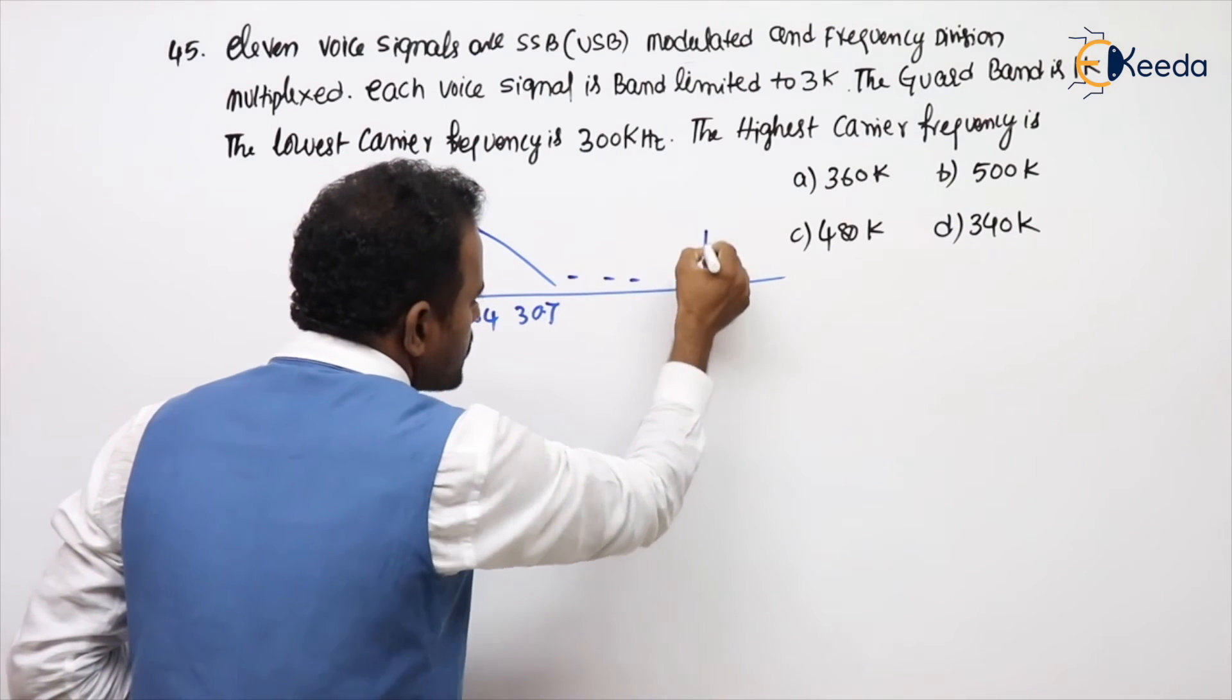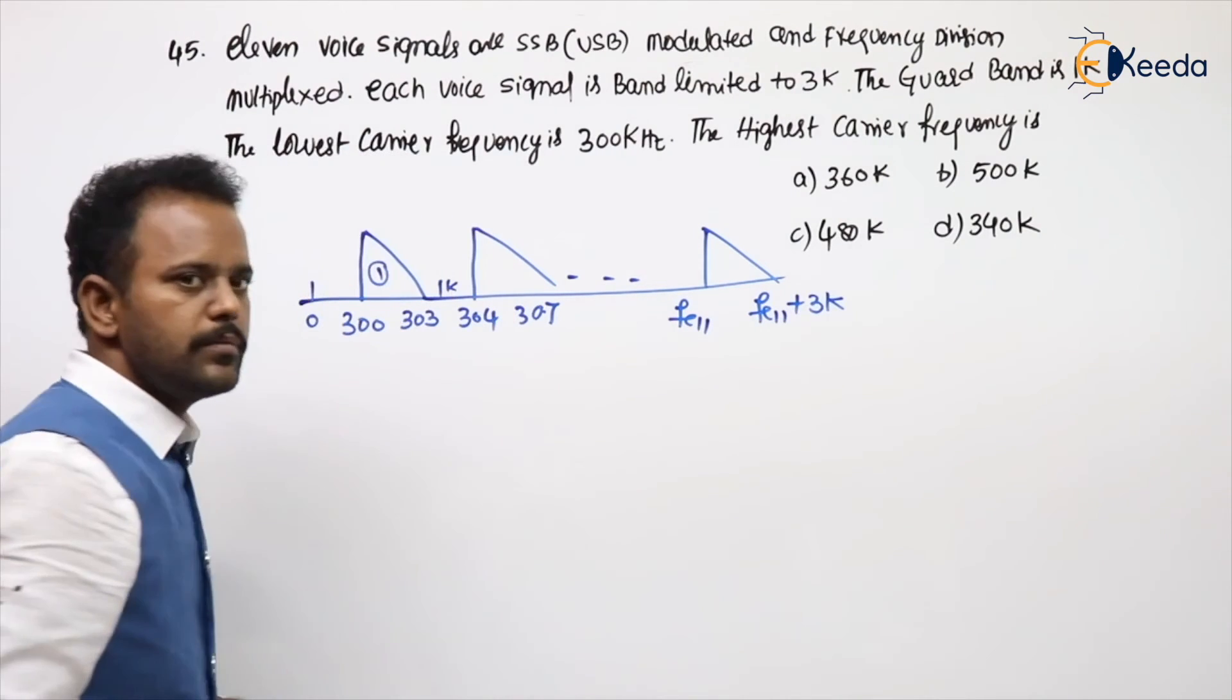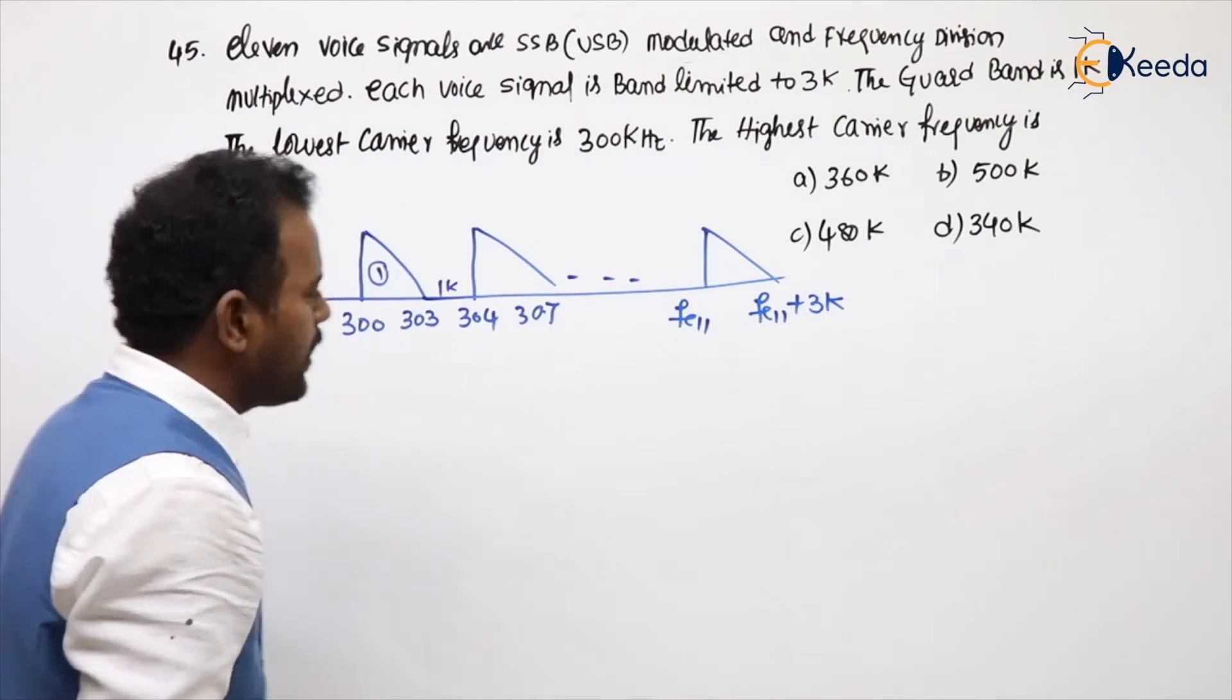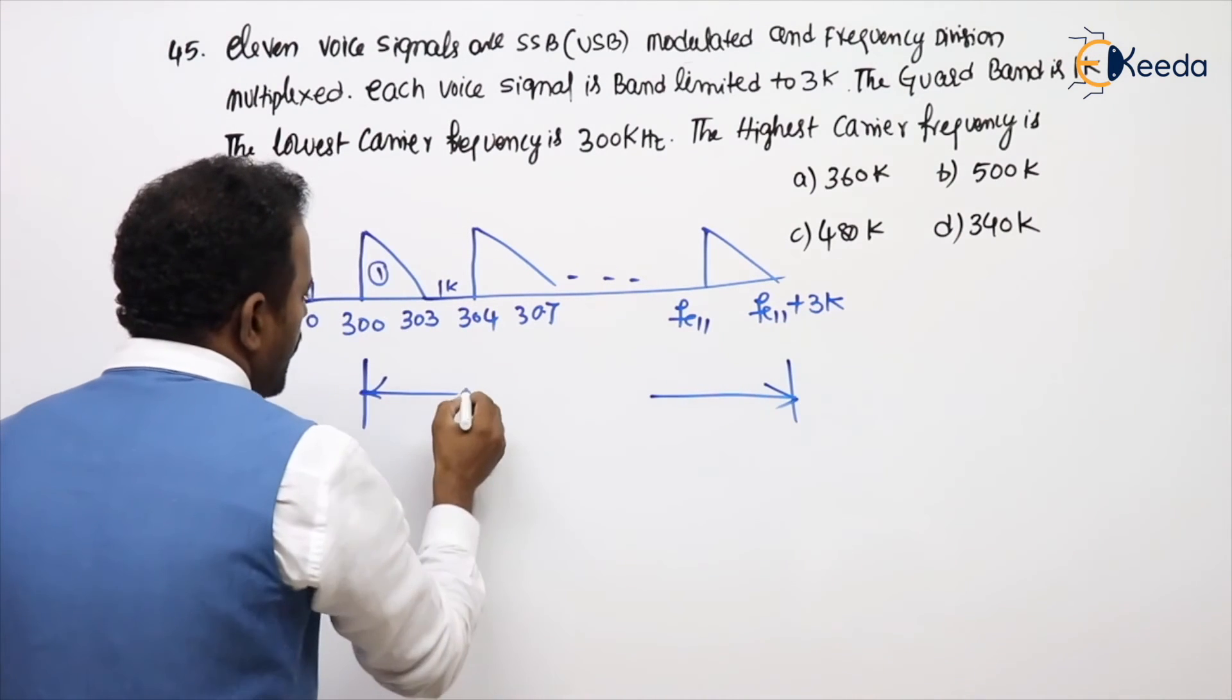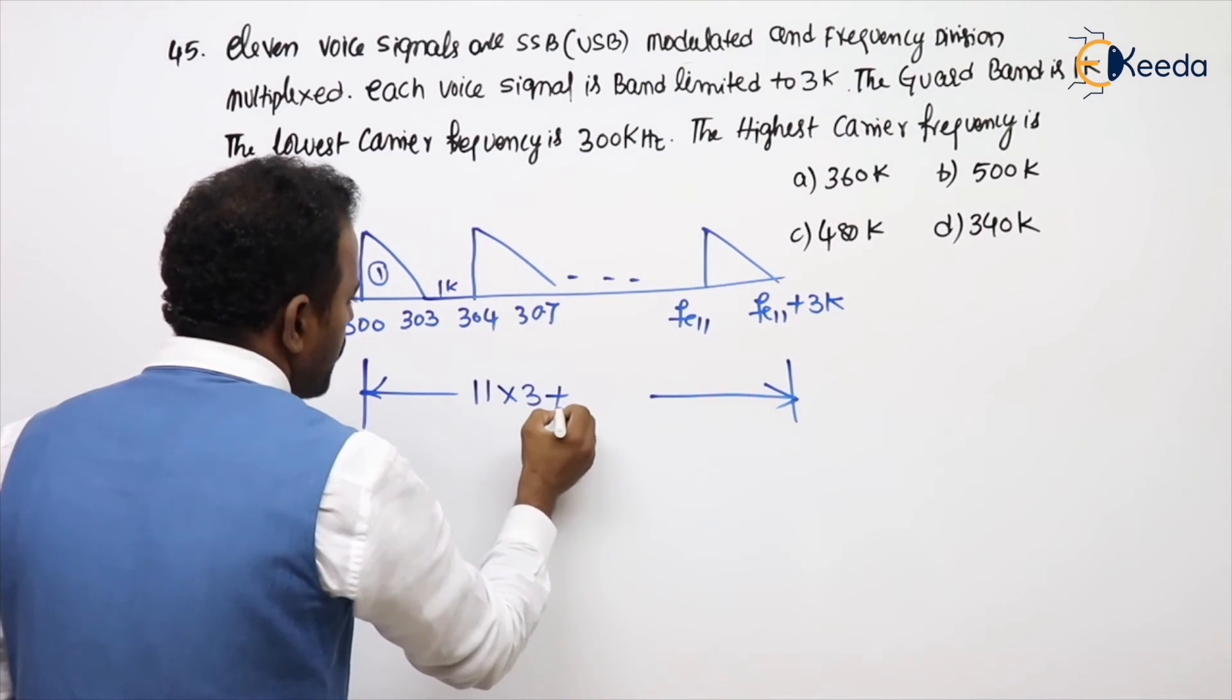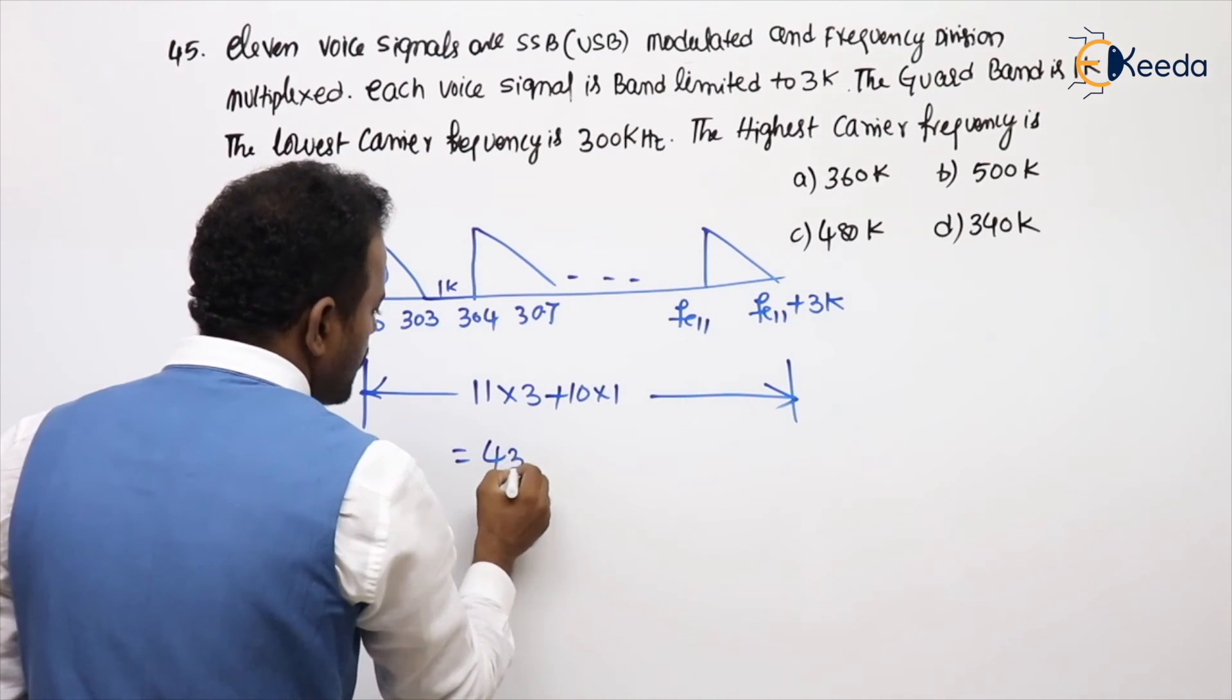Like unsolved, what is the last one? FC11, of course, this value FC11 plus 3K. Like in this manner you can calculate. I can go for total multiplexed bandwidth. What about the total? There are 11 signals, each of 3K, plus 11 signals means 10 guard bands, each of 1K. 33 plus 10 is 43K.